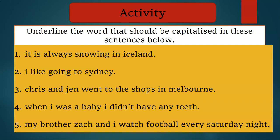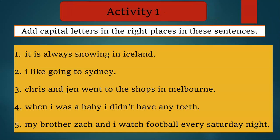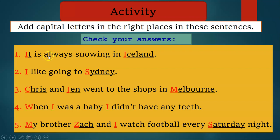Time is up — now let's reveal the answers. The letter I at the beginning of a sentence is always capitalized. 'It is always snowing in Iceland' — the letter I in Iceland is also capitalized because it is the name of a country. 'I like going to Sydney' — again, I as a personal pronoun and Sydney as a city are both capitalized. 'Chris and Jen went to the shops in Melbourne' — Chris and Jen are names of people, and Melbourne is a place.